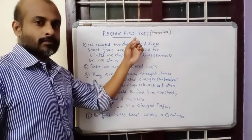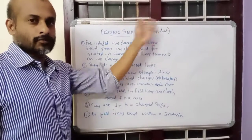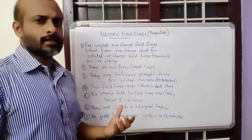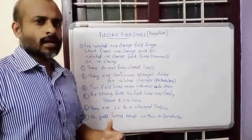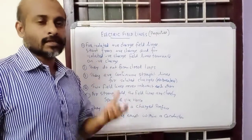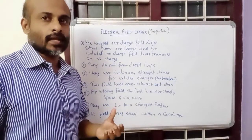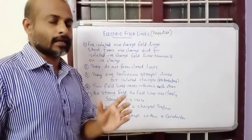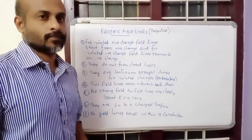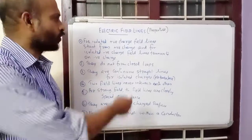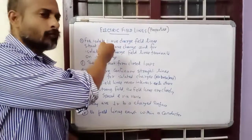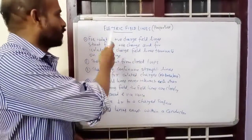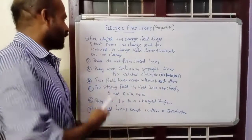Electric field lines — properties of electric field lines. Electric field lines are the imaginary lines surrounding every charge, positive and negative. So there are a few properties for the electric field lines, and we will see them one by one.